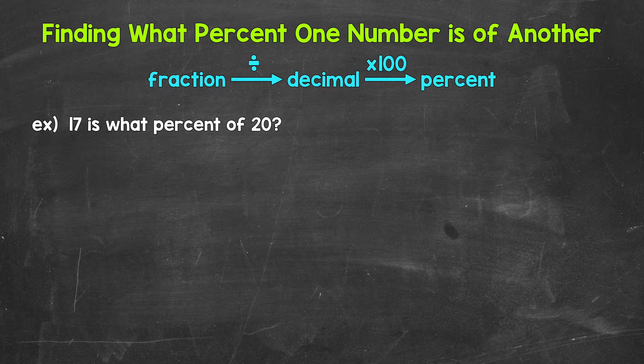One way I like to set these up and think through these is to go from a fraction to a decimal to a percent. Now for 17 is what percent of 20, let's think of this as 17 out of 20.